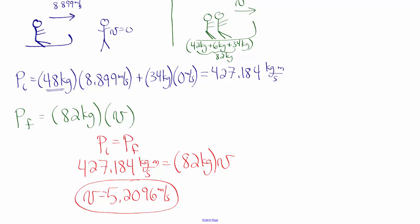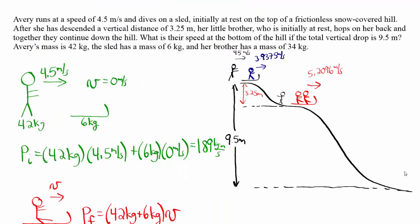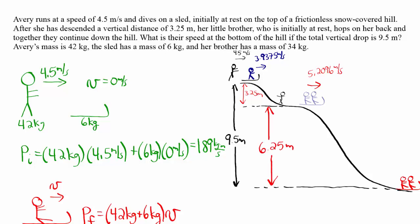Now we use conservation of energy one more time to find the speed all three have at the bottom of the hill. They're moving at 5.2096 meters per second. Calling the bottom of the hill height zero, they're starting at 9.5 minus 3.25 meters, or 6.25 meters from the bottom. With a total mass of 82 kilograms and a height of 6.25 meters, they have potential energy plus kinetic energy, which all converts to kinetic energy at the bottom.